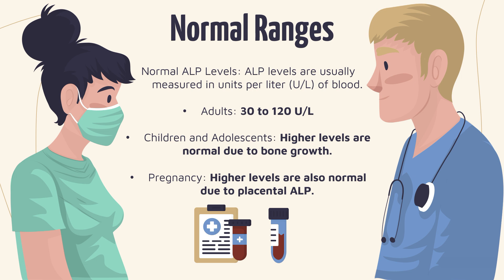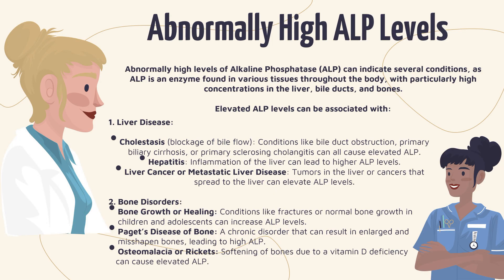Let's take a closer look at some abnormal ranges of ALP in the blood. Abnormally high levels of alkaline phosphatase can indicate several conditions, as the ALP enzyme is found in various tissues throughout the body with particularly high concentrations in the liver, bile ducts, and bones. Elevated ALP levels can be associated with liver disease, including several pathological processes such as cholestasis, hepatitis, and liver cancer or metastatic liver disease. In cholestasis, a blockage of bile flow can be caused by conditions like bile duct obstruction, primary biliary cirrhosis, or primary sclerosing cholangitis, all of which can cause elevated ALP levels.